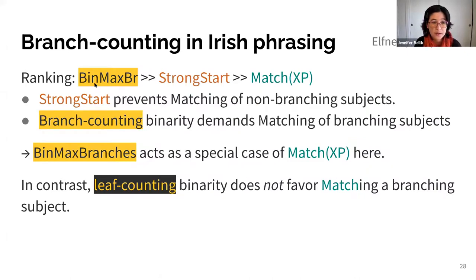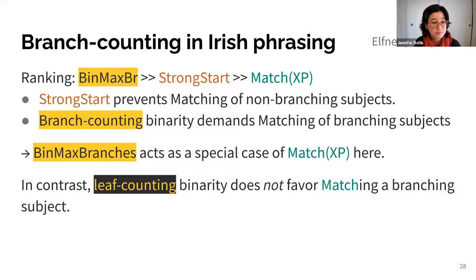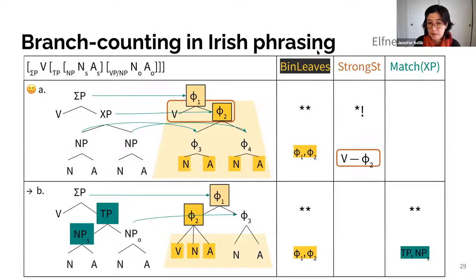The ranking bin-max-branches over strong-start over match gives us the Irish phrasing pattern: strong-start prevents matching of non-branching subjects, but when it comes to branching subjects, branch counting binarity demands that you match them. Bin-max-branches acts as a special case of match-XP here. In contrast, leaf counting binarity does not favor matching a branching subject. If we swap in bin-leaves for bin-branches, bin-leaves can't distinguish between the candidates, because both of them contain two phis with more than two prosodic words.